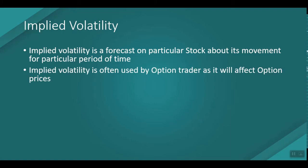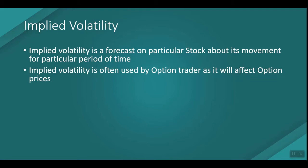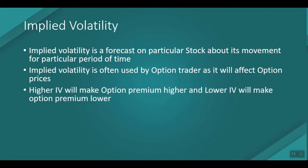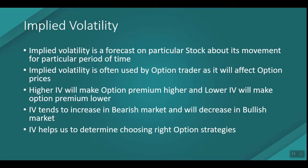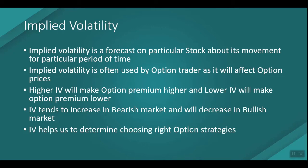Implied volatility is often used by option traders because it affects option prices. Higher IV makes option premiums higher, and lower IV makes option premiums lower. IV tends to increase in bearish markets and decrease in bullish markets. IV helps us determine the right option strategy to choose, since it decides whether option premiums will increase or decrease for a particular time period.